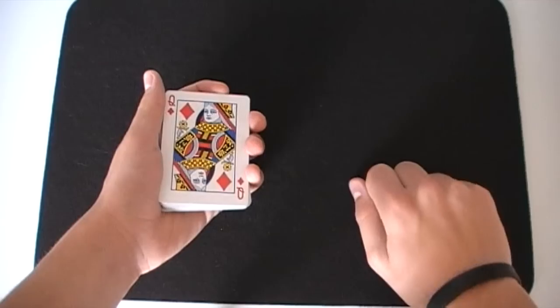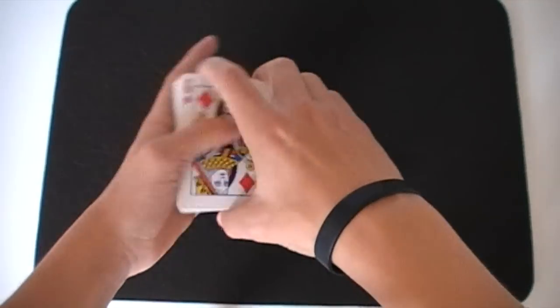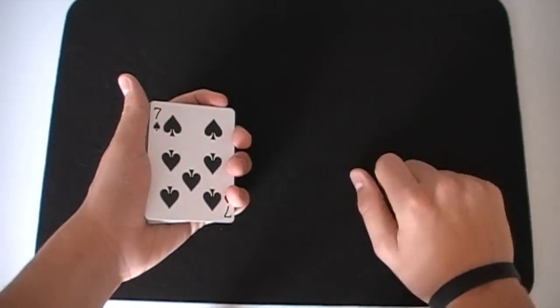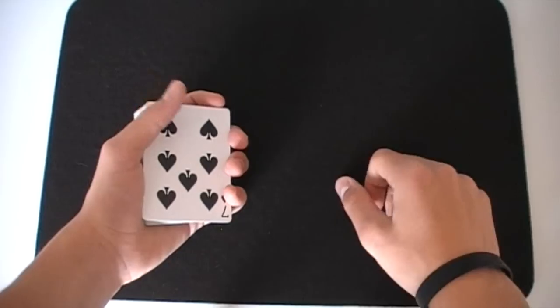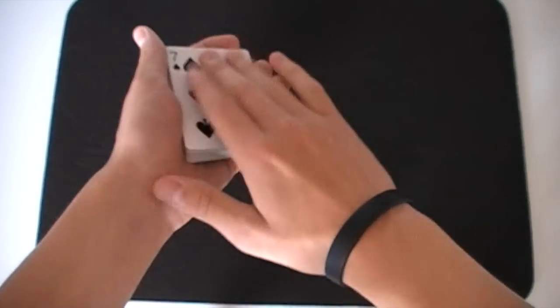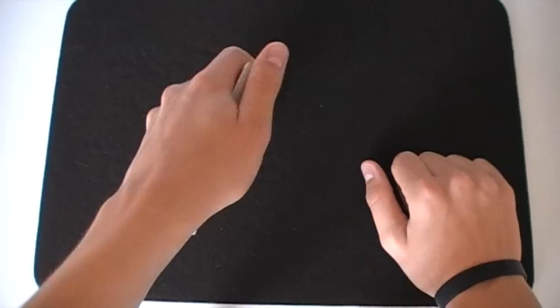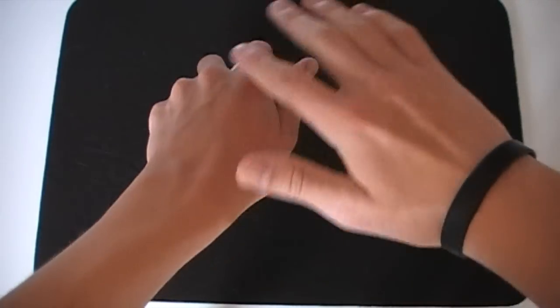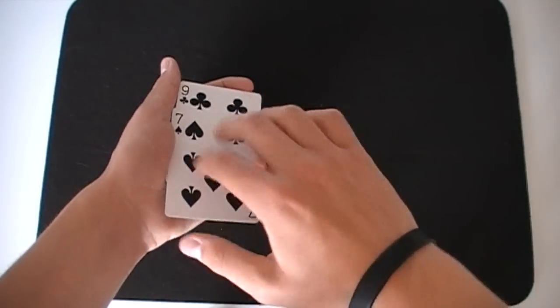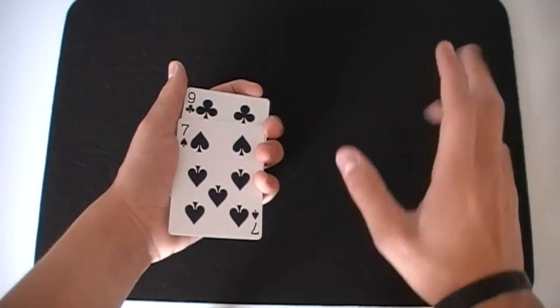As you can see it's really simple, but the thing is that when you do it for a spectator, from their point of view they can't see that card that's dumped right there at all because your hand actually covers this back end of the card if you do it correctly.